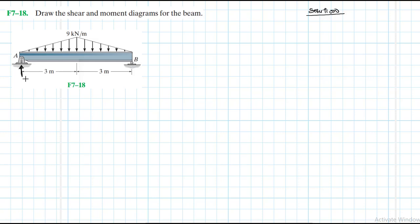We have a hinge at A, so we are going to have a reaction force A_Y and A_X, and we'll have B_Y as the reaction force at B. We'll have an equivalent force just at the mid-span, let's call it F, which is equal to half times six times nine. This gives us half by six is three, three by nine is 27.